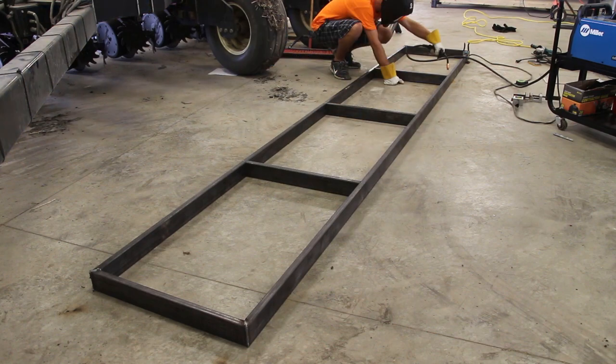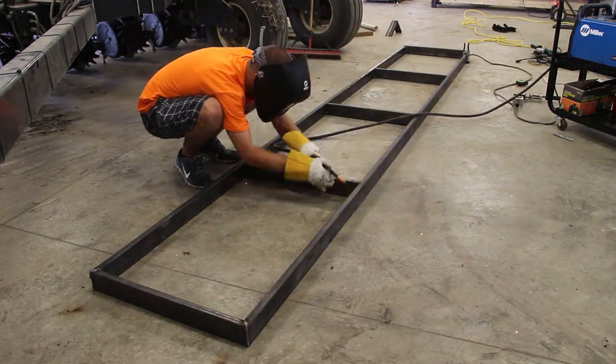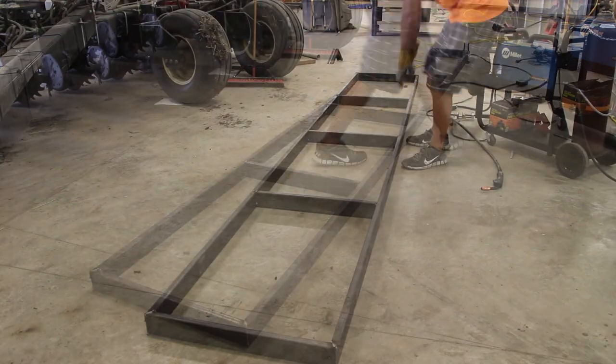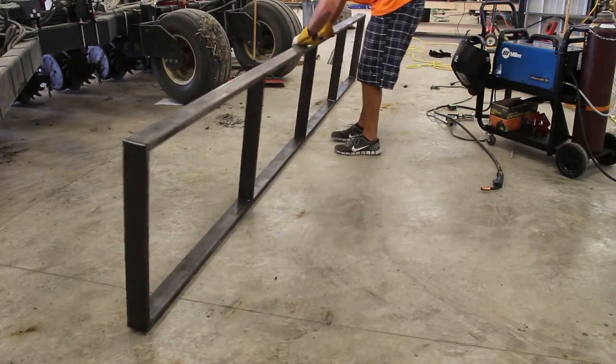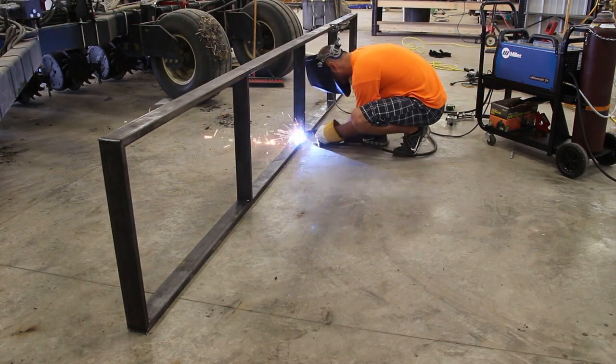I place the supports at the marks we just made and then tacked them in place with four tacks per joint. When they were all tacked I stood the assembly on end and could weld them horizontally. This was the turning point in my welding when I could see the quality increase.